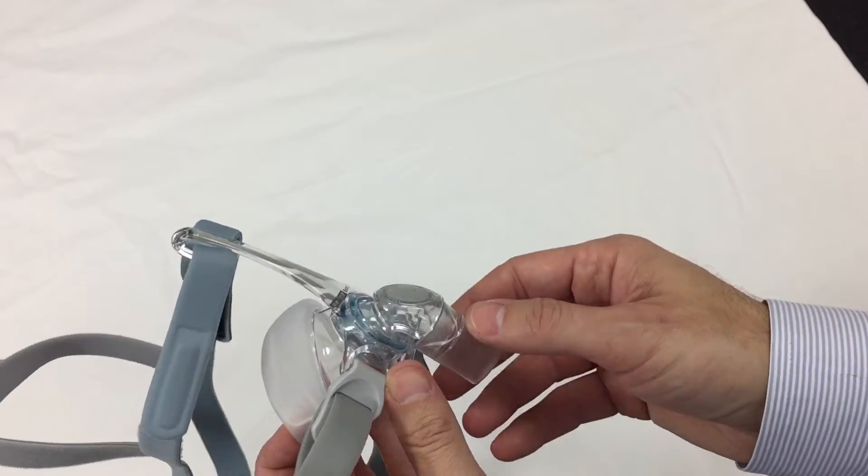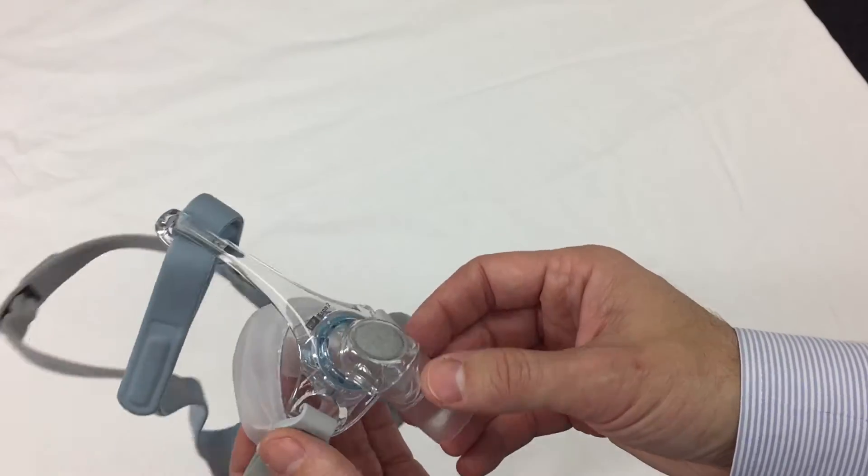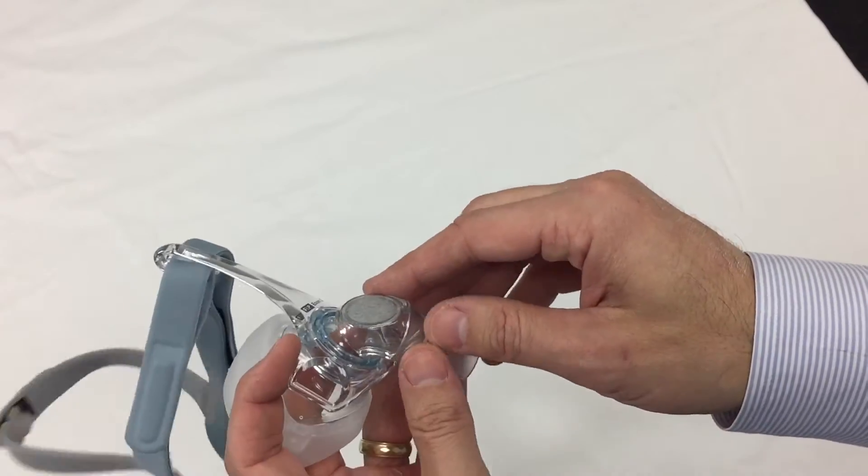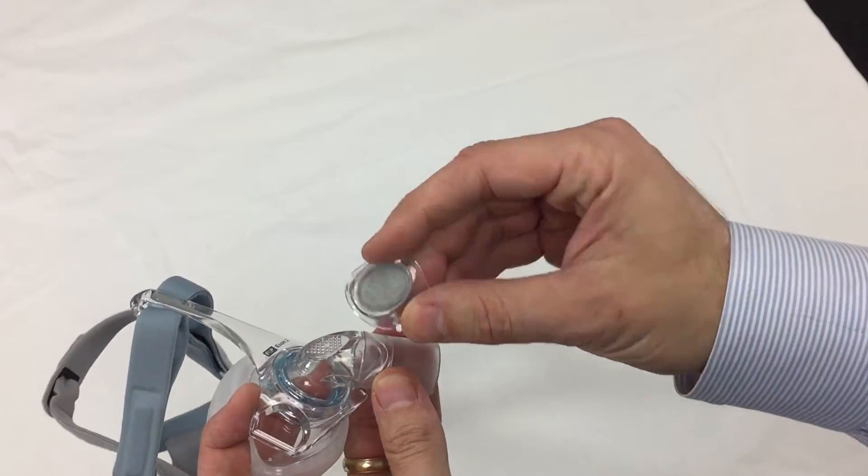And that swivels all the way around. It has a lot of margin of error to it. This is a new mask filter. The previous Isan, you had to throw them away.